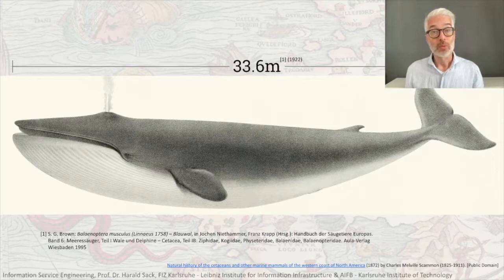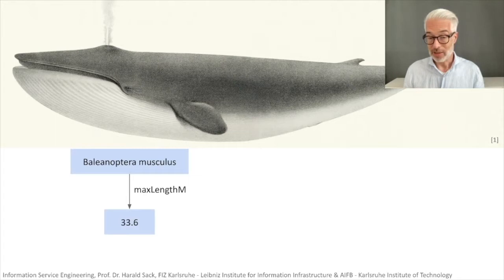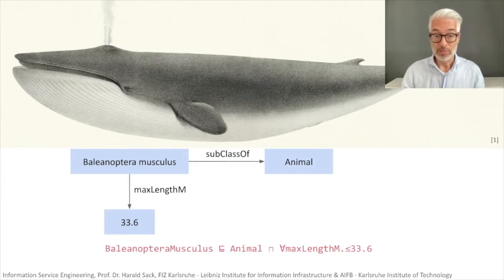If you want to put this kind of knowledge together with data in a machine, we have to use knowledge representations. The blue whale — its Latin name is Balaenoptera musculus — has a maximum length in meters of 33.6. There is no larger blue whale so far. We know that a blue whale is an animal, and with description logics we can say a blue whale is a subclass of some animal which has a maximum length of 33.6 meters.